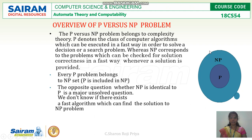But what about the opposite question — whether NP is identical to P — is a major unsolved question. We don't know if there exists a fast algorithm which can find the solution to an NP problem. Whether NP is identical to P is the fundamental P versus NP problem.